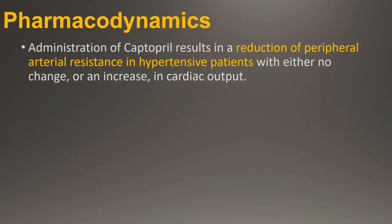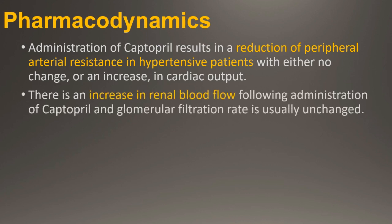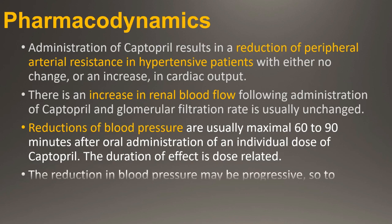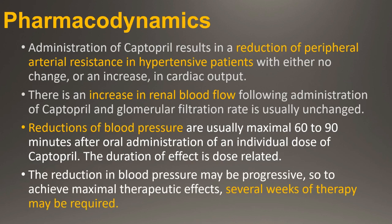Pharmacodynamics: Administration of Captopril results in reduction of peripheral arterial resistance in hypertensive patients with either no change or an increase in cardiac output. There is an increase in renal blood flow following administration of Captopril and glomerular filtration rate is usually unchanged. Reductions of blood pressure are usually maximal 60 to 90 minutes after oral administration. The duration of effect is dose-related, and the reduction in blood pressure may be progressive, so the achievement of maximal therapeutic effects may require several weeks of therapy.